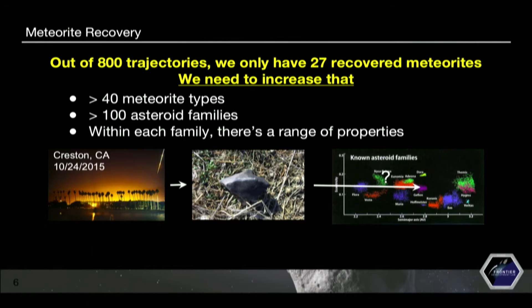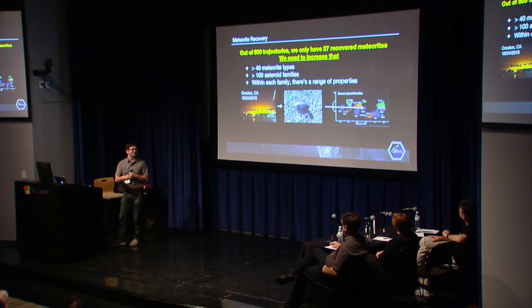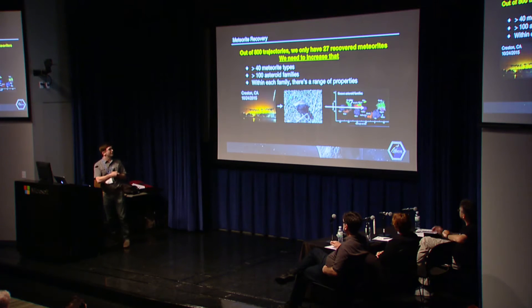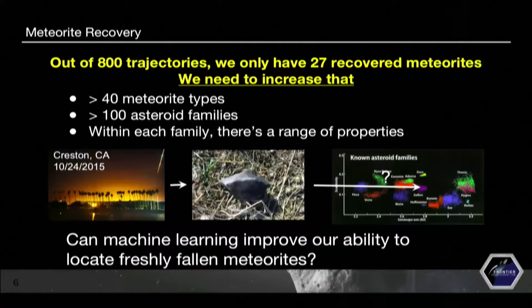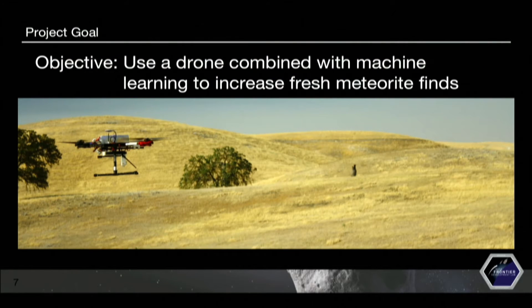We really need to increase that number, because there are 40 different meteorite types, over 100 asteroid families, and a range of different properties within each. In order to draw a line from a trajectory to a certain type of material and say what these asteroid families are composed of, we need to increase the number of recovered meteorites. So our question is: can machine learning improve our ability to locate these freshly fallen meteorites in the field? Our objective is using an autonomous drone combined with machine learning to automate the process of finding fresh meteorites.